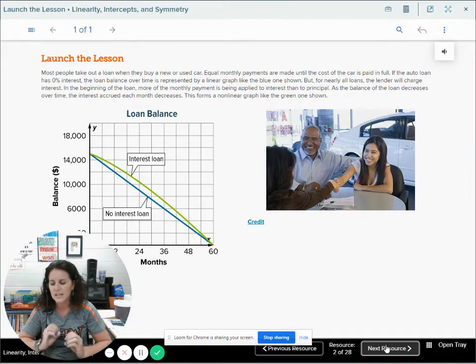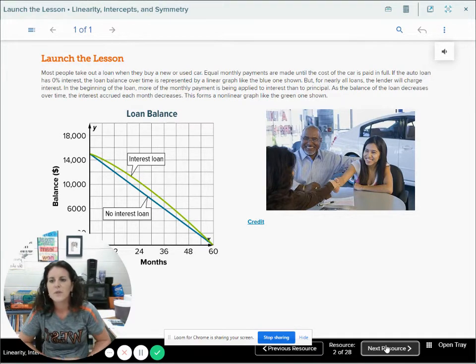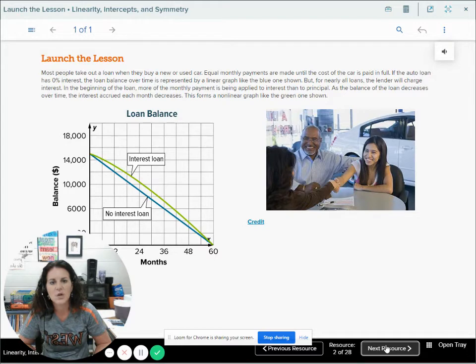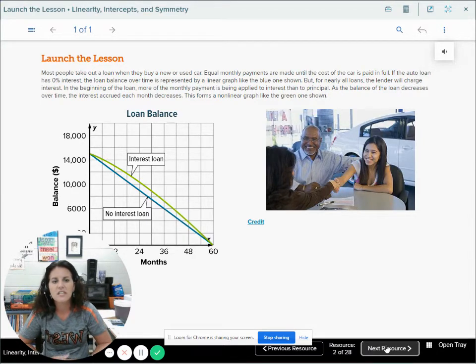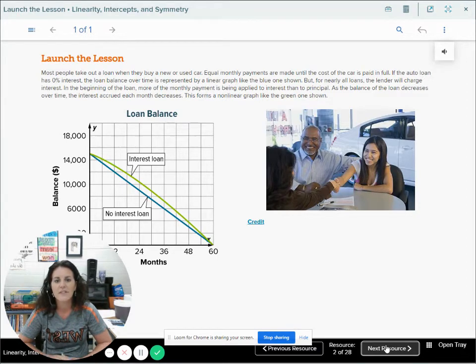Most people take out a loan when they buy a car. Equal monthly payments are made until the cost is paid in full. If the auto loan has 0% interest, the loan balance over time is represented by a linear graph, like the blue one shown. But for nearly all loans, the lender will charge interest. In the beginning of the loan, more of the monthly payment is being applied to interest than to principal. This forms a nonlinear graph like the green line shown.